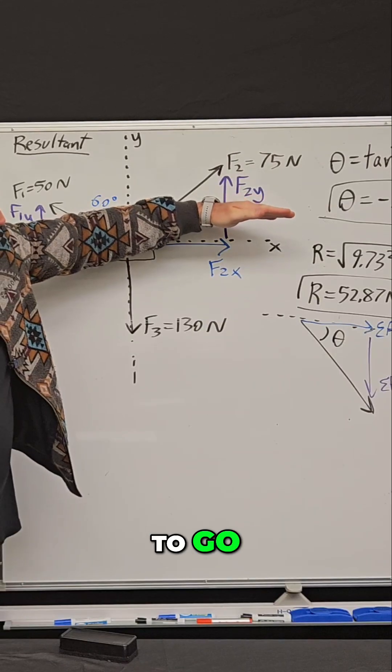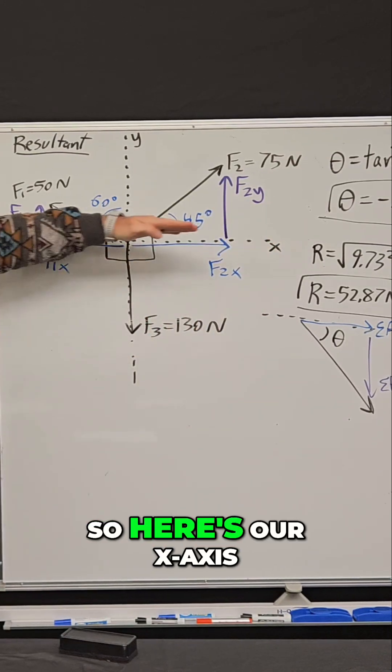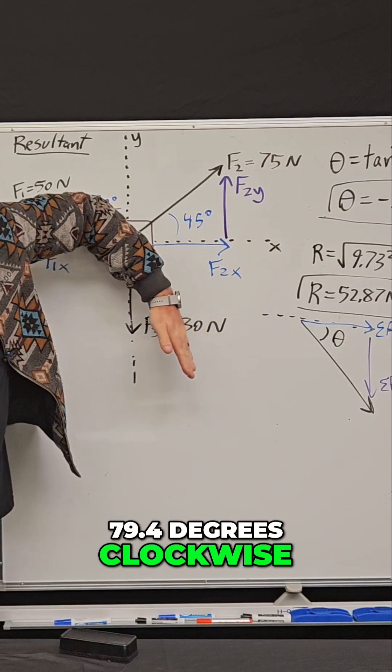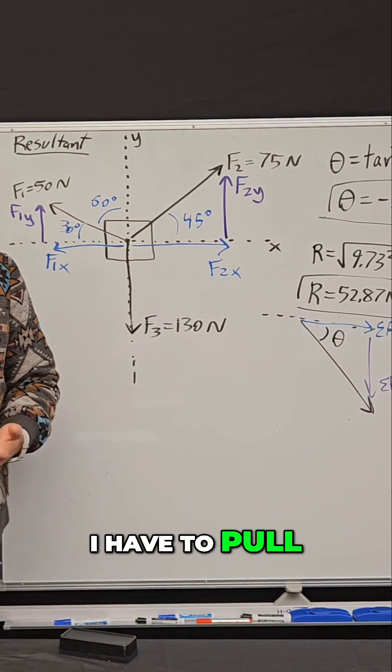You have to go clockwise from the x-axis. So here's our x-axis. If I go 79.4 degrees clockwise, I get to that point. That is the angle at which I have to pull.